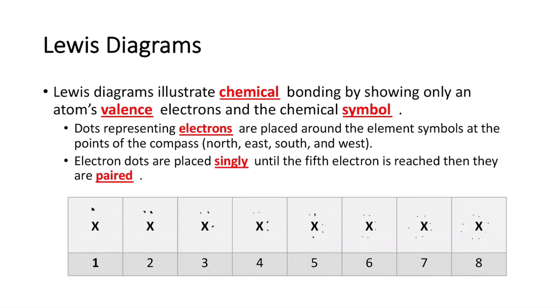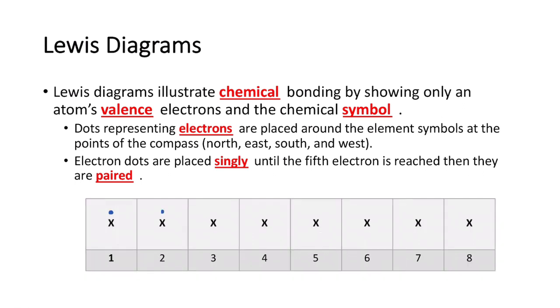So what does this look like? We have an unknown element X, just hypothetical. If it only had one valence electron, like hydrogen, lithium, or sodium, we place one dot. For two, we're going clockwise, so not pairing them yet. Three...